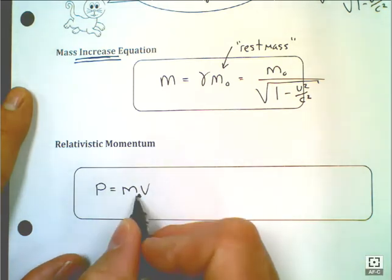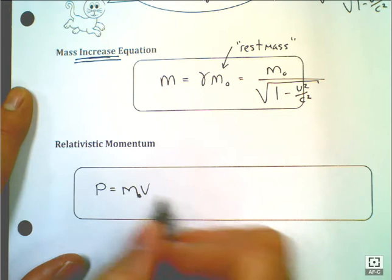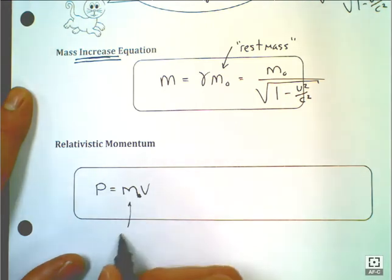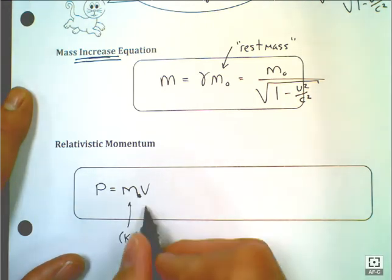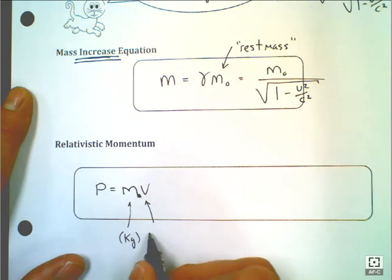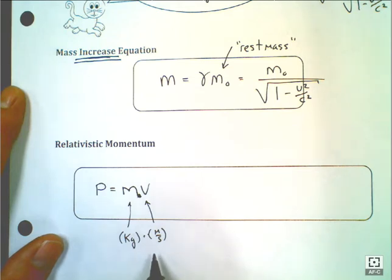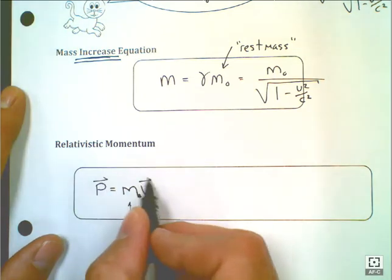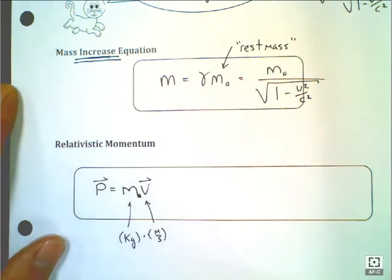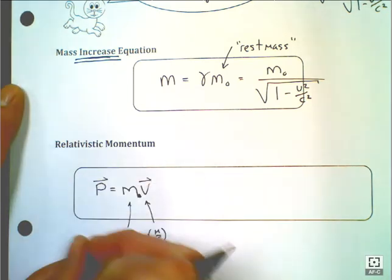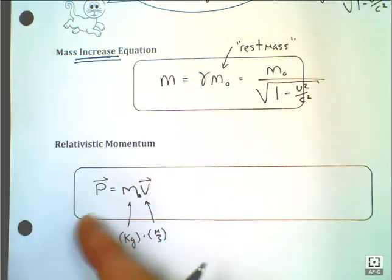It's a quantity that has kilogram units here, meter per second units here. So it's a kilogram meter per second. That's what the unit for momentum is. It's a vector quantity. This is a conservative property. We'll learn more about this later. It's a very important property when you're looking at collisions of objects and things like that.